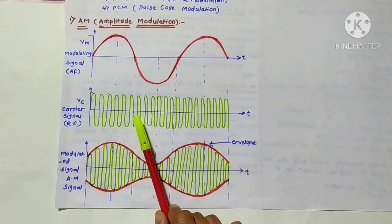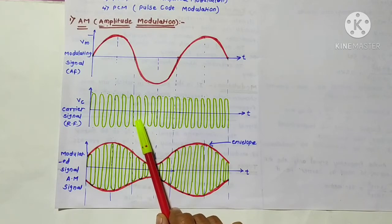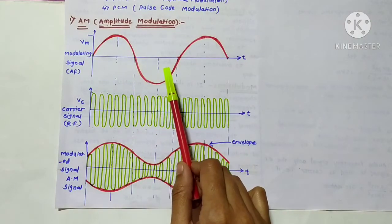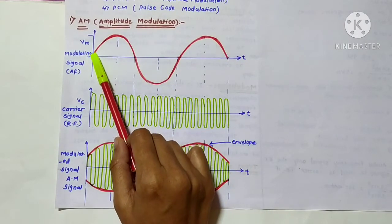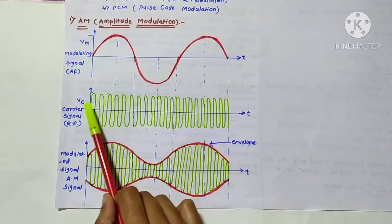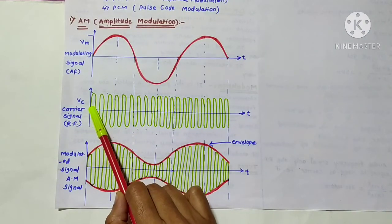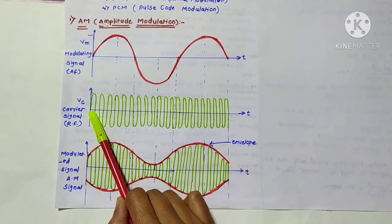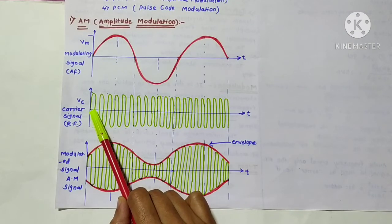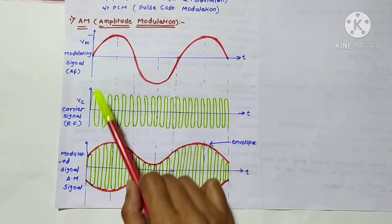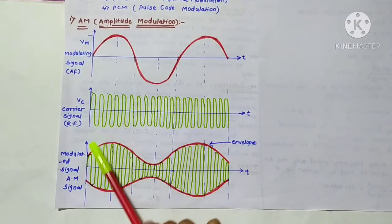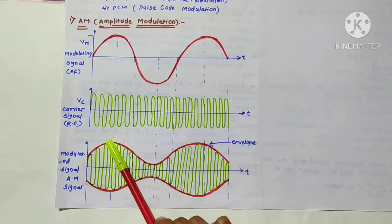Time-domain signals can be displayed on the screen of a cathode ray oscilloscope. The radio frequency signal being modulated is the carrier and the audio or video signal is the modulating signal. The term RF does not define any specific frequency band — it just means the frequency is sufficient for transmission. This figure illustrates the process of amplitude modulation. When drawing an AM waveform, when the modulating signal is zero, there is no change in the amplitude of the carrier.